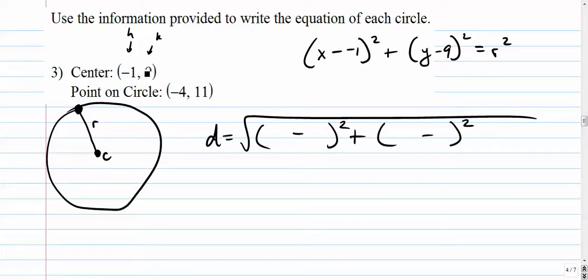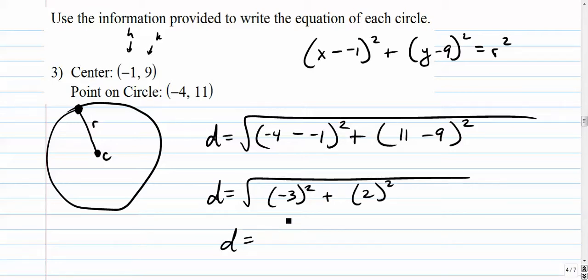Where we're going to go x sub 2 minus x sub 1, y sub 2 minus y sub 1. Negative 4 plus 1 is negative 3. 11 minus 9 is 2. Negative 3 squared is 9 plus 4. So it's the square root of 13. That's what our radius is.